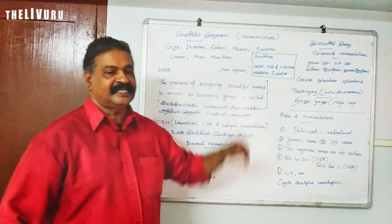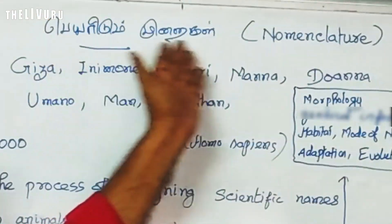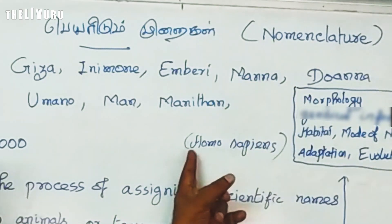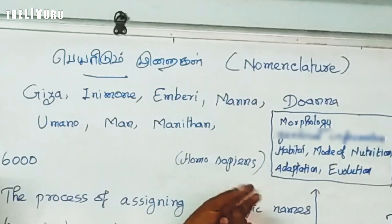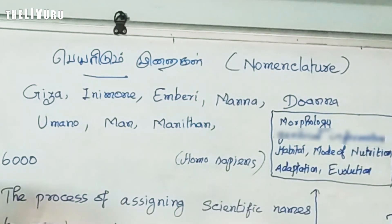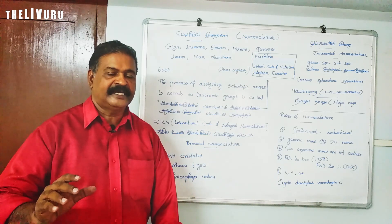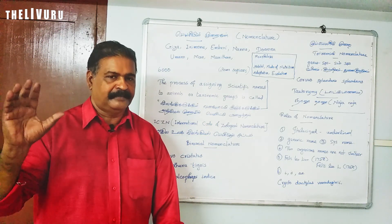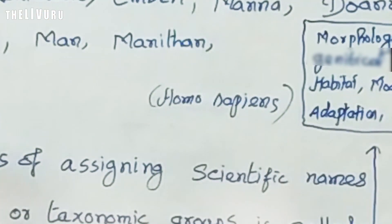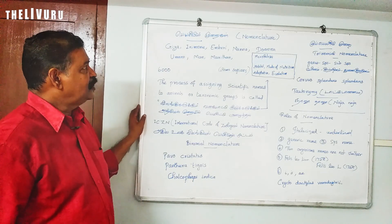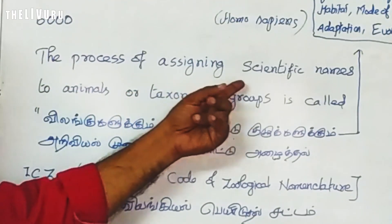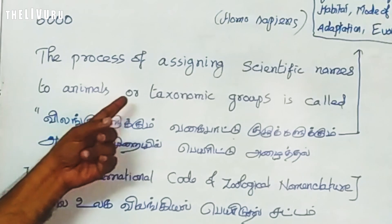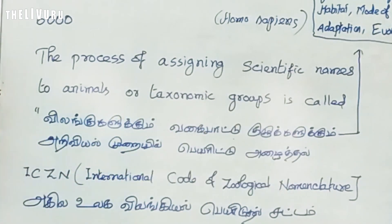The scientific name, or zoological name, of man is Homo sapiens. Homo denotes the genus name, and sapiens is the species name. This scientific name is recognized worldwide. So, what is nomenclature? The process of assigning scientific names to animals or any taxonomic group is called nomenclature.